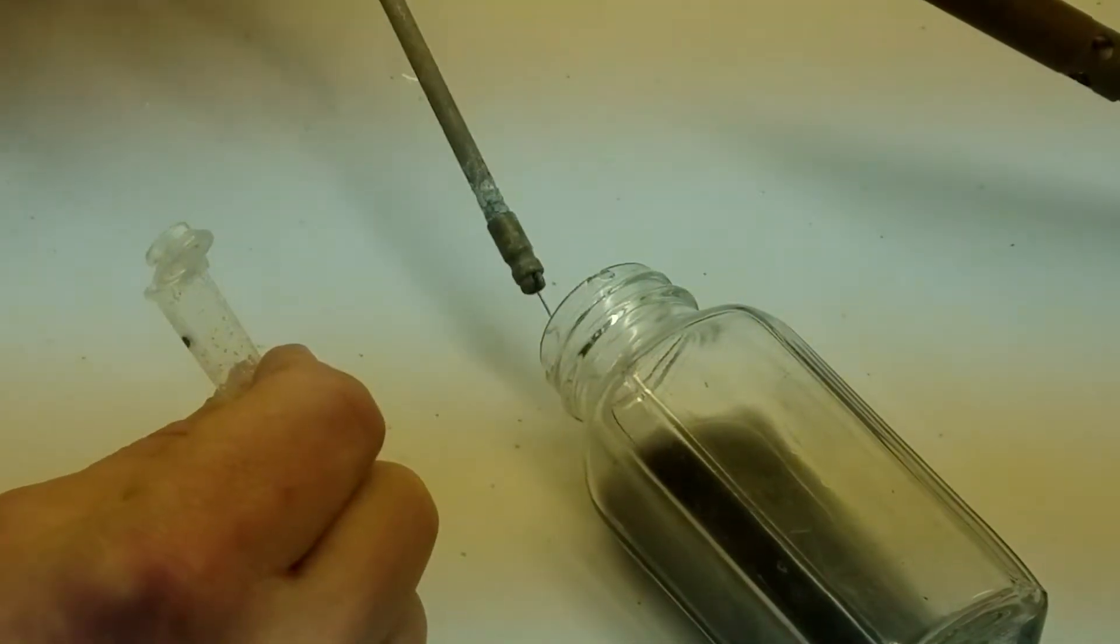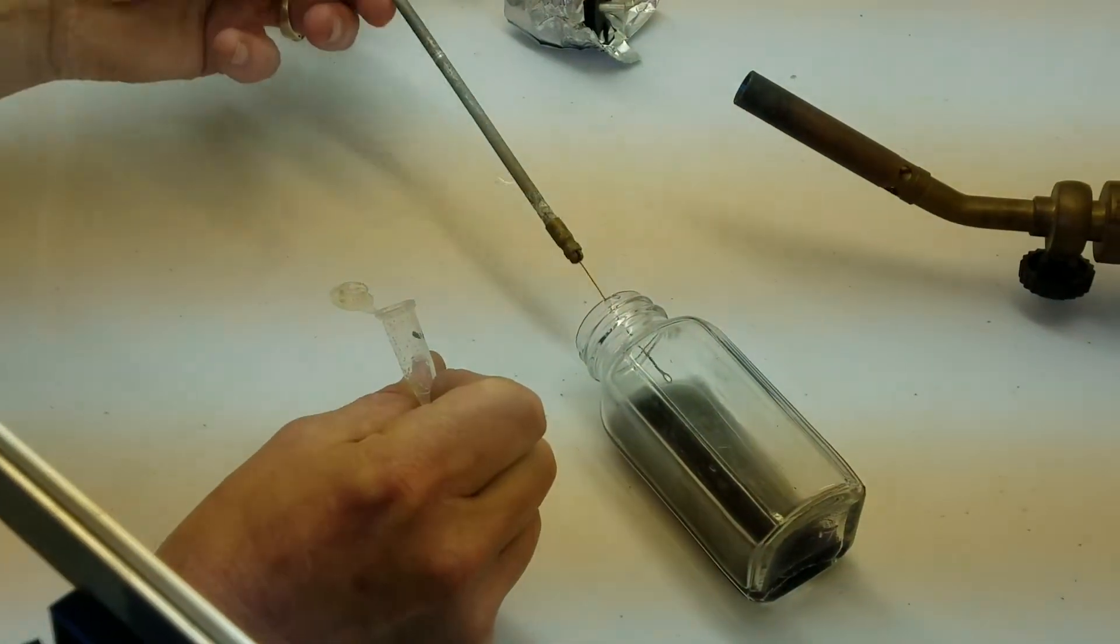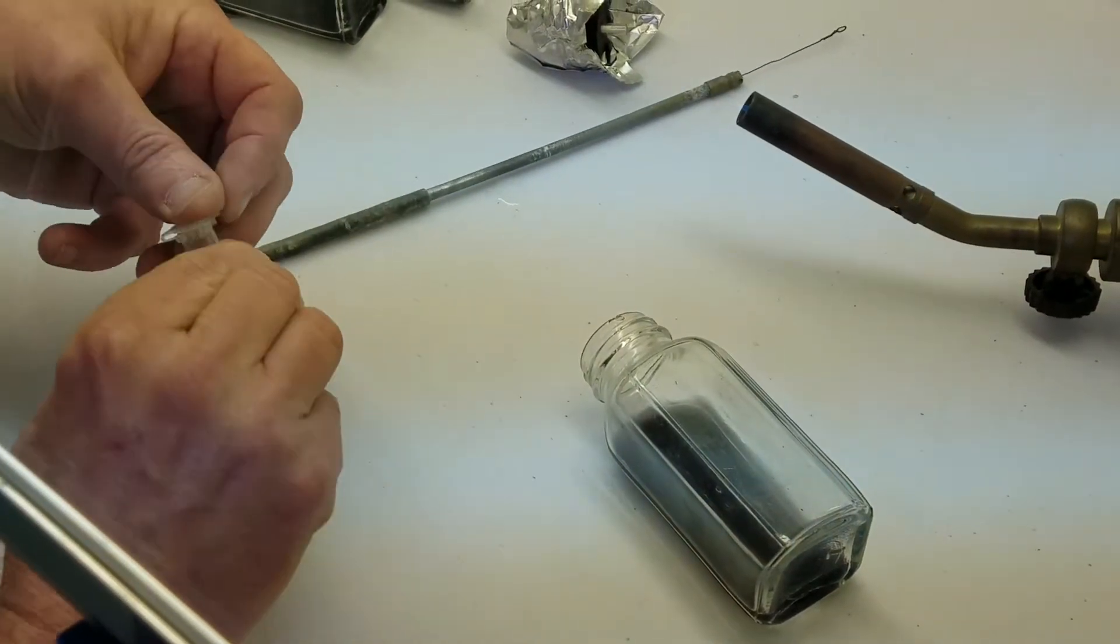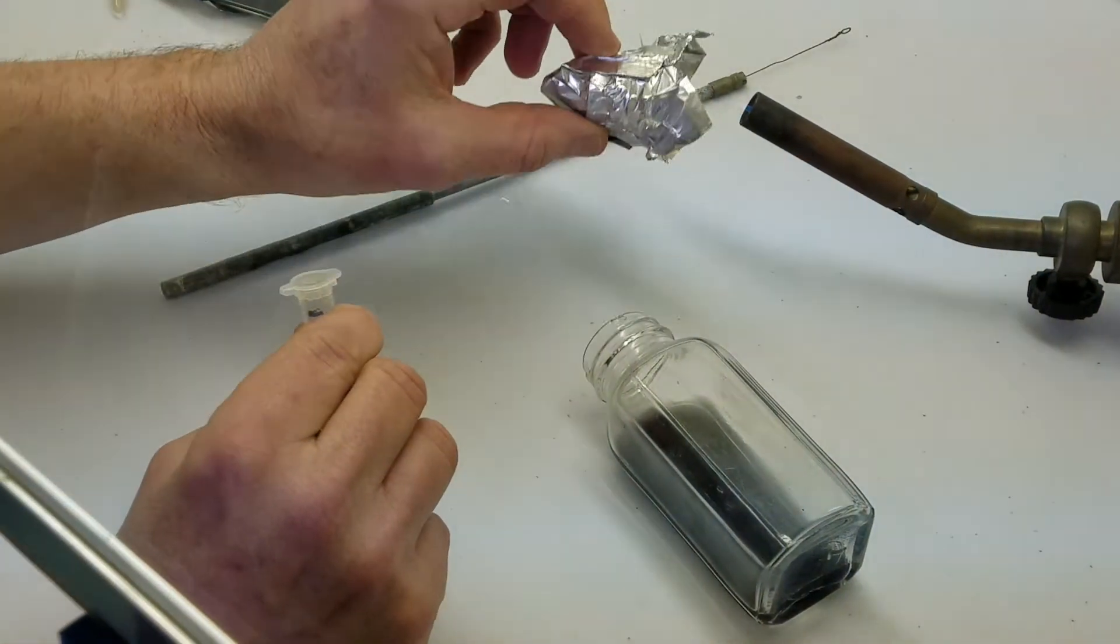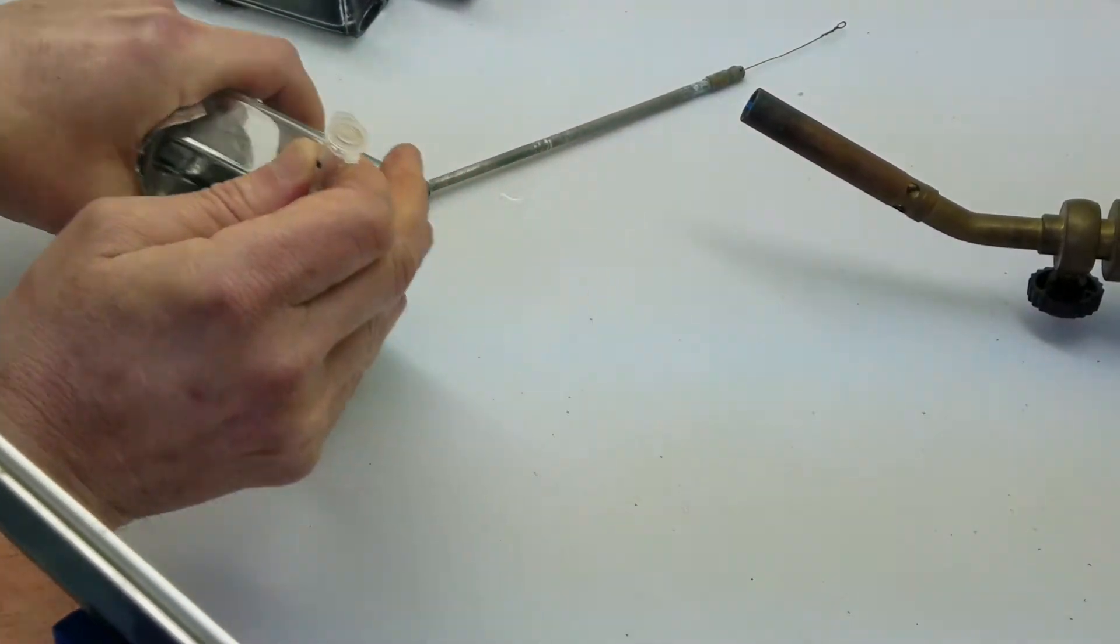This works really easily with terrestrial seeds like these chlorea. If you're working with something that's epiphytic, epiphytic seeds sink, they don't float so it makes it a little bit more difficult. In that case it's often easier to use an eyedropper to squirt the seeds into the bottles.